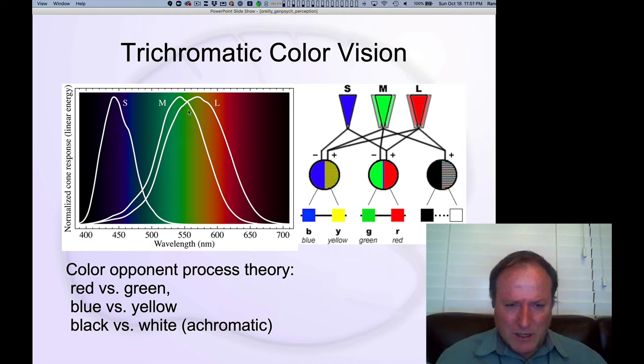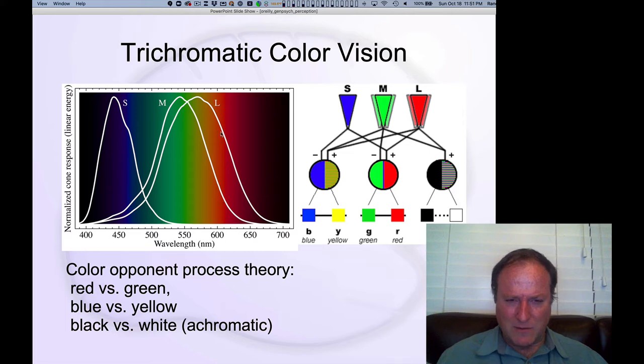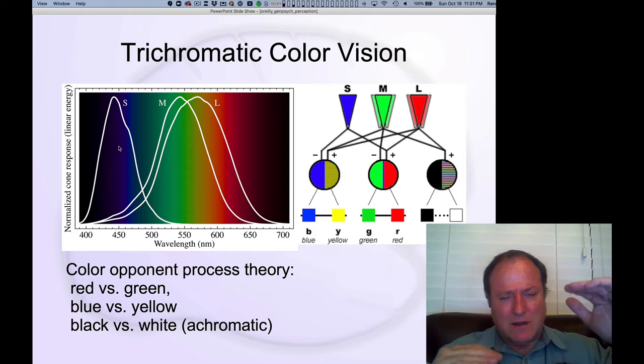So like right here, this particular color of green, you would have equal activity in the medium and the long detectors. If you go over here more towards this kind of red color that we would call a true red, there you're having more of the long frequency detector and then less of the medium frequency and no blue. Likewise, as you come over here into this green-blue area, you get different amounts of the medium and short wavelength detectors depending on where you are in that spectrum.